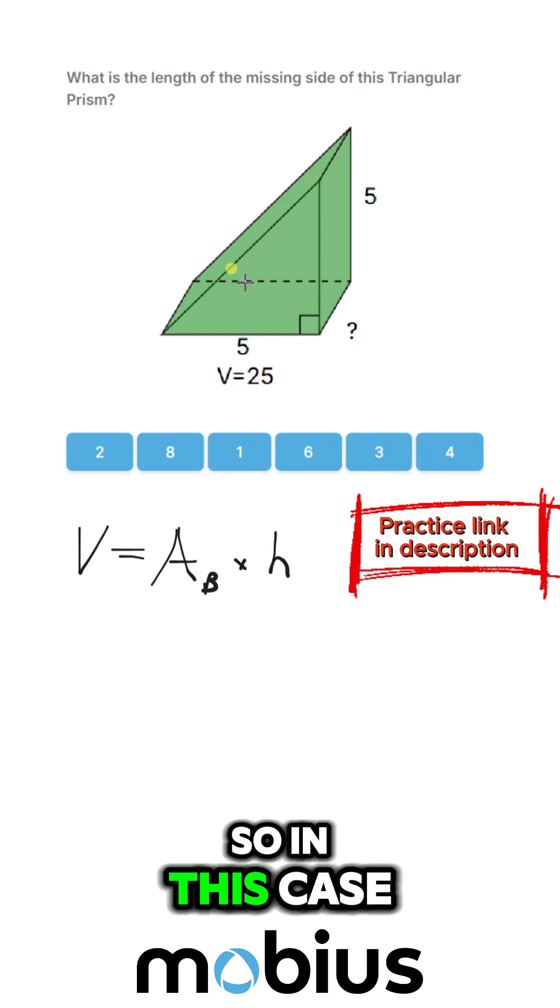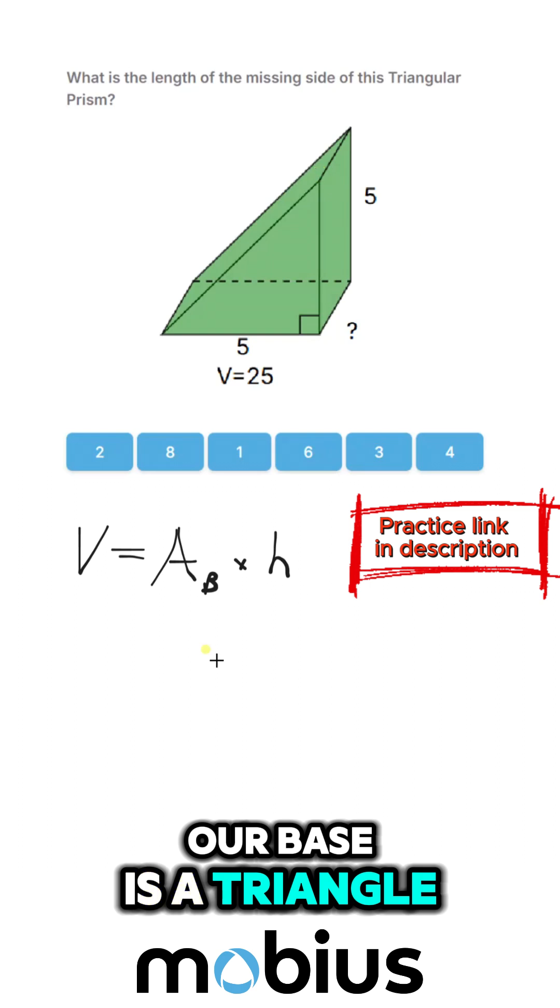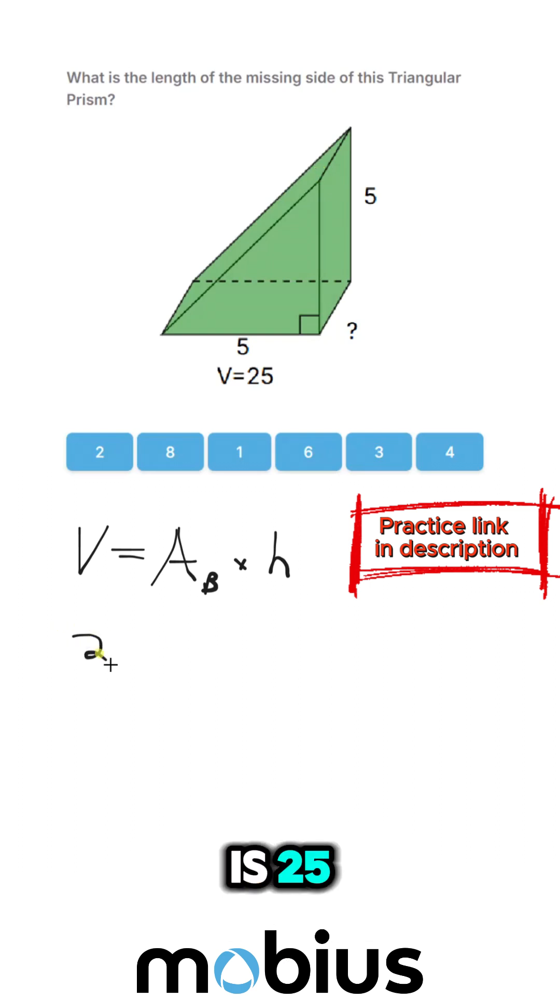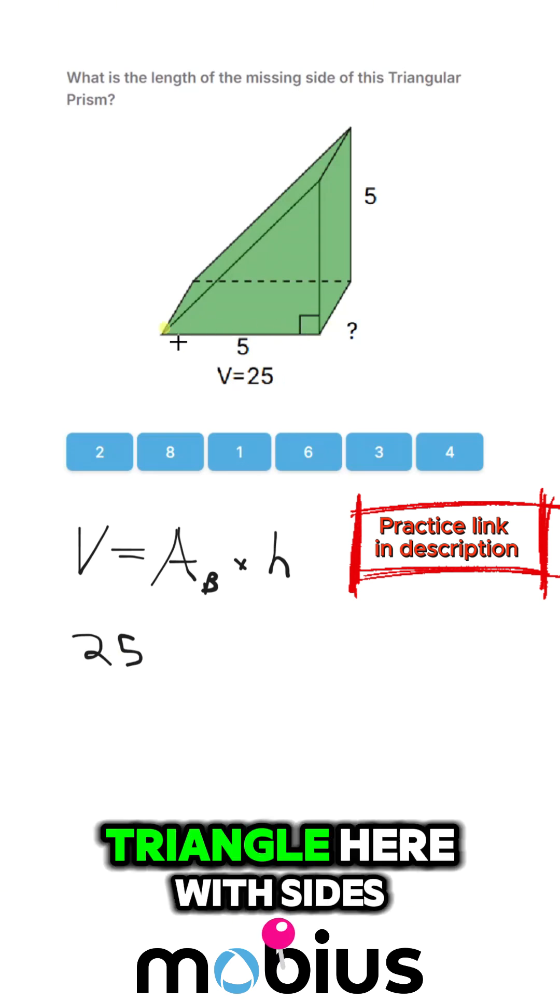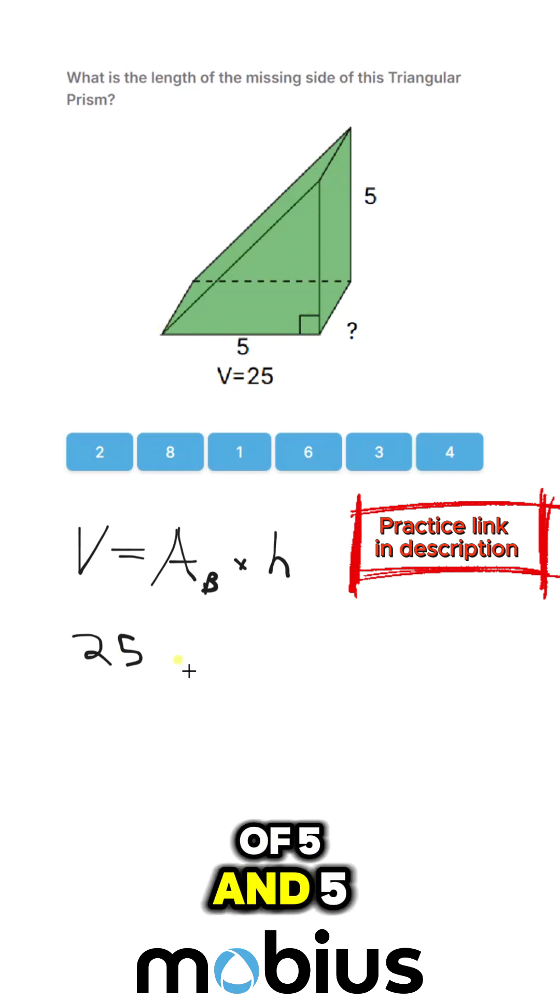So in this case our base is a triangle. So we know our volume is 25 and we have a triangle here with sides of 5 and 5.